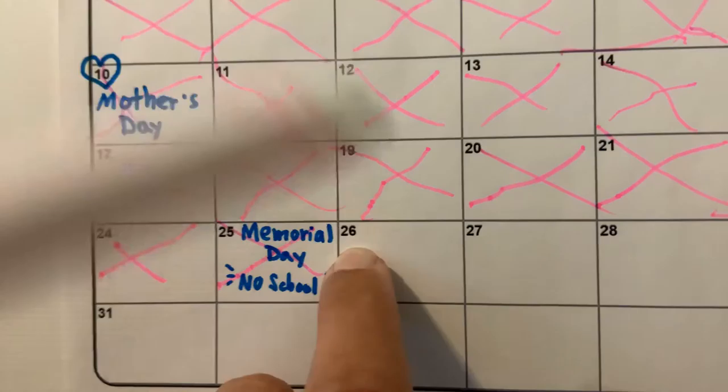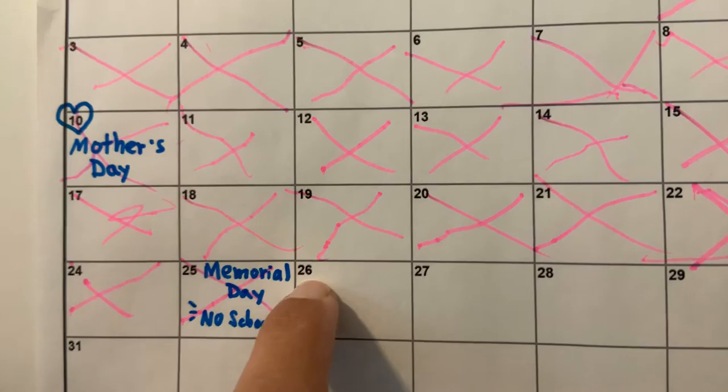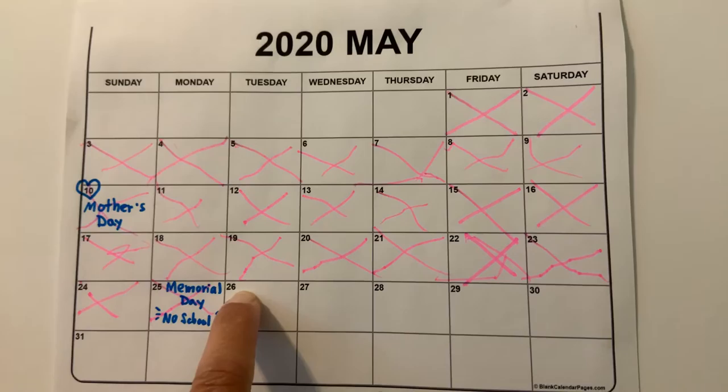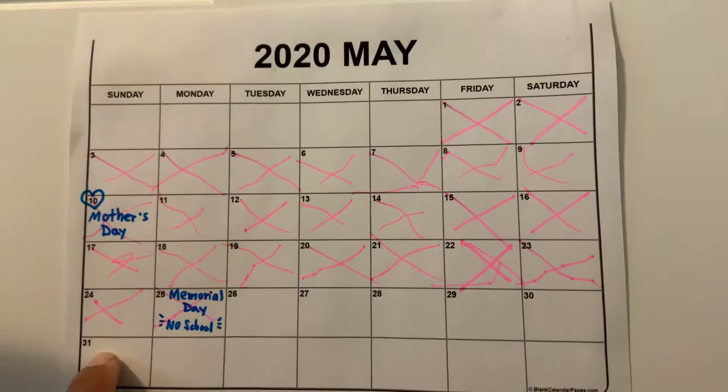Let's zoom in on that. So if yesterday was the 25th, today is the... oops, you went backwards. 24th, 25th — this is the 26th! Yes, and I can't believe it, but we're almost finished with the month of May. So let's count to see how many days after today until the last day of May.